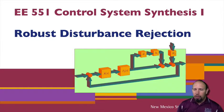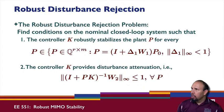Okay, we're now going to talk about robust disturbance rejection. In robust disturbance rejection, the problem is to find the conditions on the nominal closed loop system such that the controller K robustly stabilizes the plant for every P, and the controller K provides disturbance attenuation.